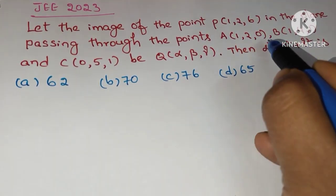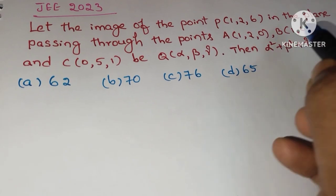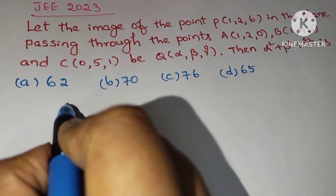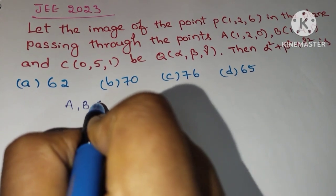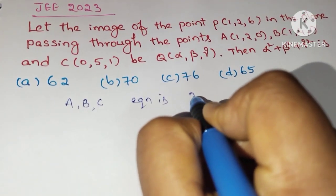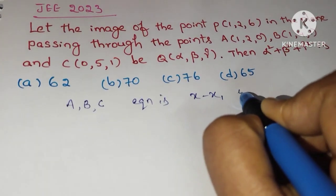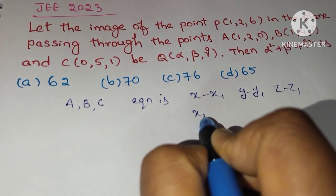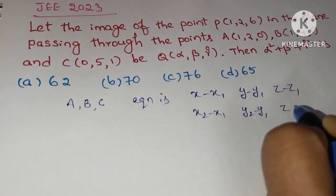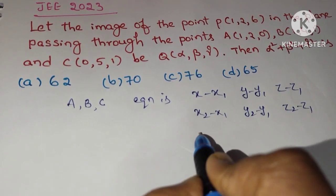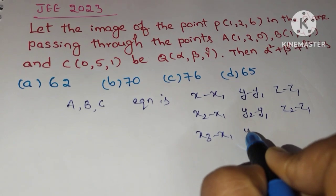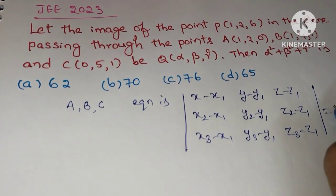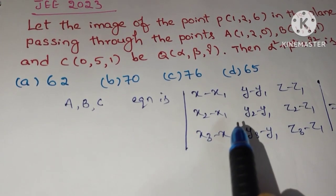In this question we are going to find this expression. We are given three points A, B, C in the plane, so we find the plane equation. The formula when we have three points A, B, C in the plane is: |x−x1, y−y1, z−z1; x2−x1, y2−y1, z2−z1; x3−x1, y3−y1, z3−z1| = 0.